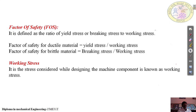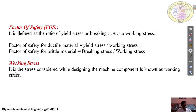Now, factor of safety. It is defined as the ratio of yield stress or breaking stress to working stress. Factor of safety for ductile materials is yield stress by working stress. Factor of safety for brittle materials is breaking stress by working stress. We take yield stress for ductile materials because up to the yield point it obeys Hooke's law. We take breaking stress for brittle materials because up to that point it obeys Hooke's law and there won't be any elongation. Working stress is the stress considered while designing a machine component.